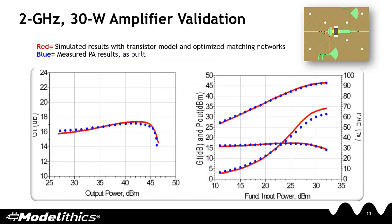Here you see both simulated results and measured data of a 2 GHz 30W amplifier. The red traces represent the simulated results, while the blue symbols represent the measured data.